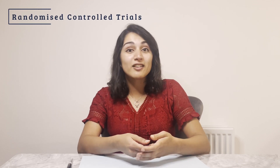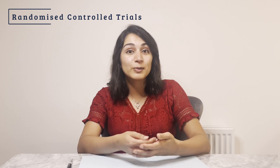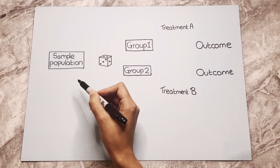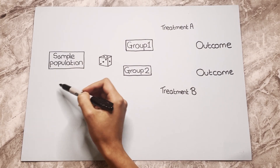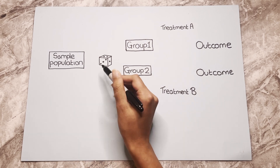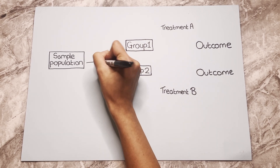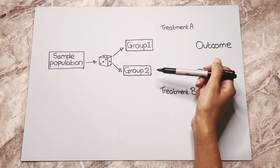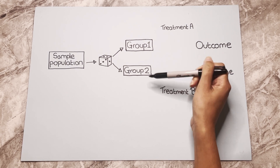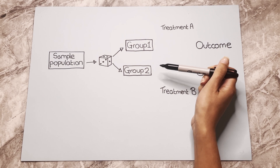Randomised control trials are a type of experimental study. In this study, participants are randomly assigned to two or more groups. All of the groups will be the same except for what intervention they receive. Participants in both groups will be the same except for the intervention they receive.